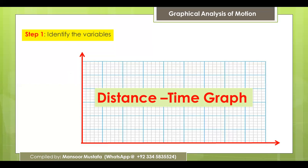Time does not depend on whether the object is moving or not, or whether distance is being covered or not. That's why time is an independent quantity and must be placed on the x-axis. Distance, being the dependent quantity, is placed on the y-axis.